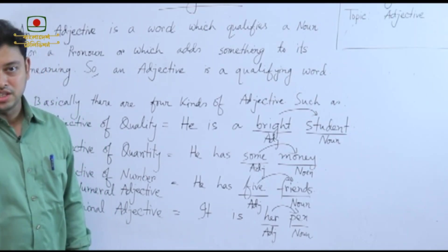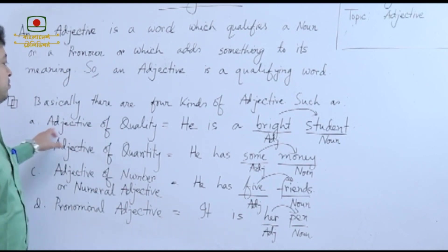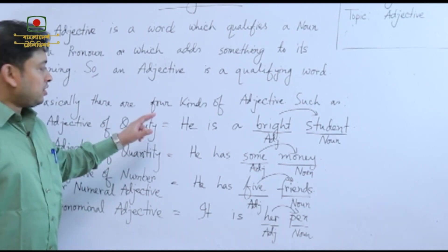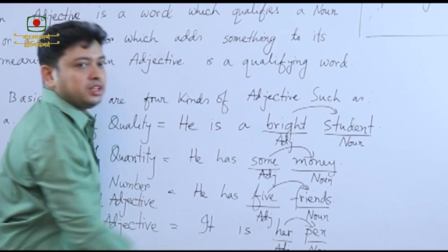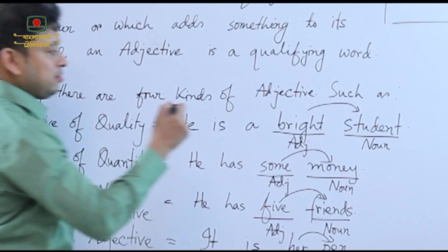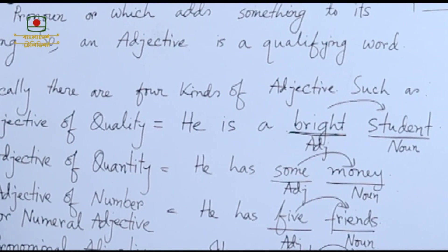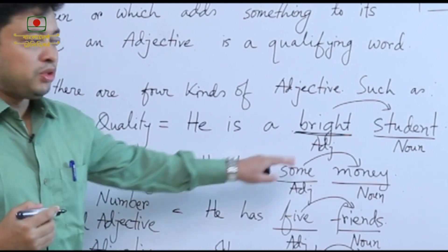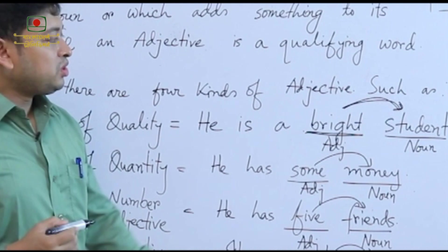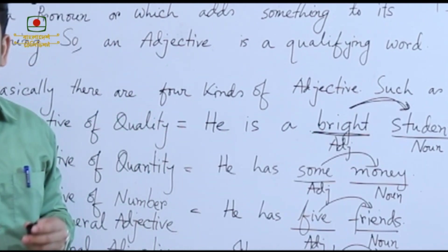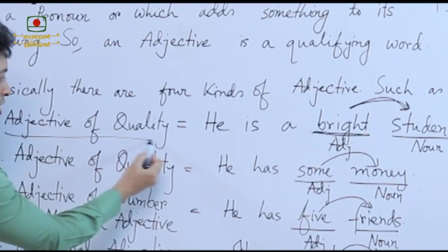Let us talk about the classification of adjective. Number one is adjective of quality. For example: He is a bright student. Here 'bright' is the key word. This is an adjective because it is qualifying the word 'student', and student is a noun. As we are talking about the quality of the student, that is why the name is adjective of quality.